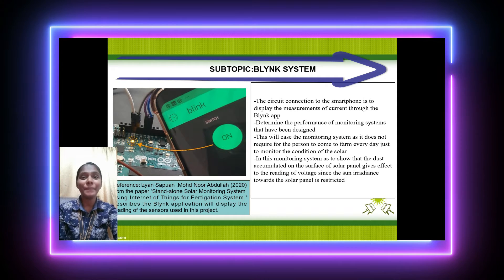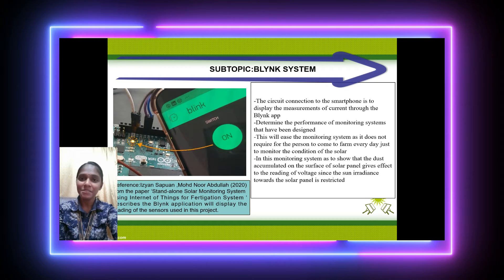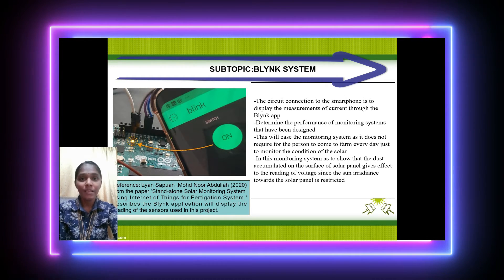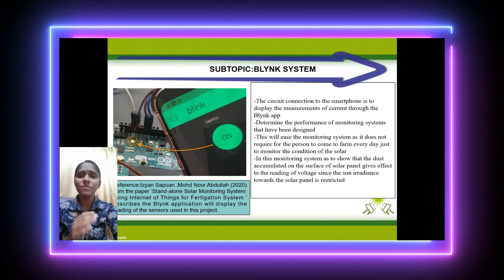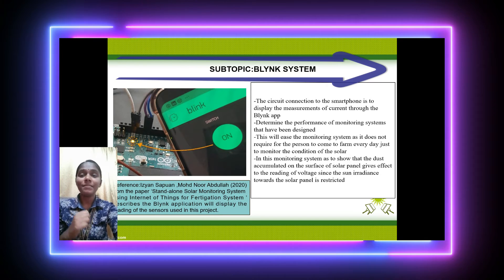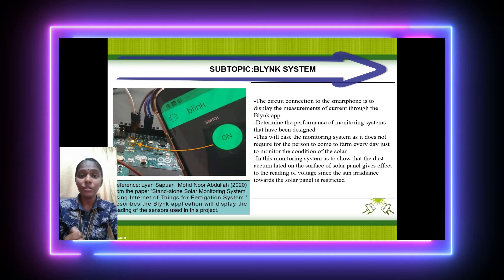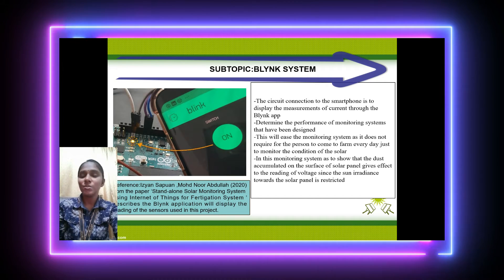The next topic is the blink system, which is my part in this project. As part of the new solar improvement, the blink system now has the capability to check the power rate from anywhere. Once we have completed the wiring process and tested the circuit, we will link the WiFi module to the monitoring Blink app on our smartphone.